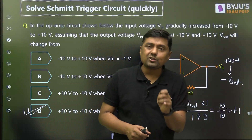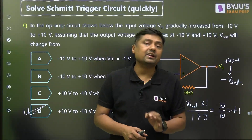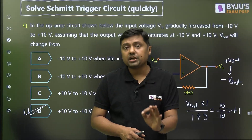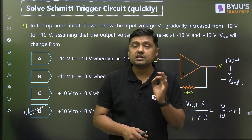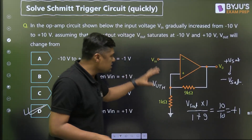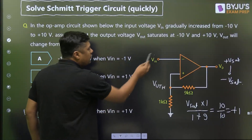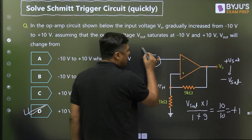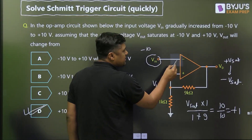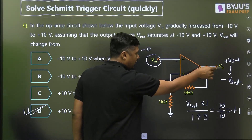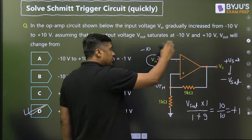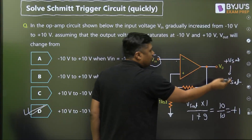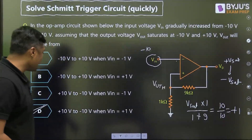That is the short trick to solve questions on the symmetry circuit. Remember: find the upper threshold level, lower threshold level, and hysteresis voltage. Based on the initial value of V-in, decide the initial value of V-sat. If the input is highly negative, due to the 180-degree phase shift you get a positive output. When the input increases and the negative terminal crosses the upper threshold level, the output switches from plus V-sat to minus V-sat.